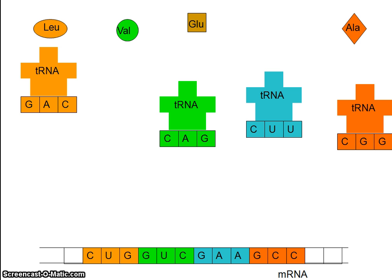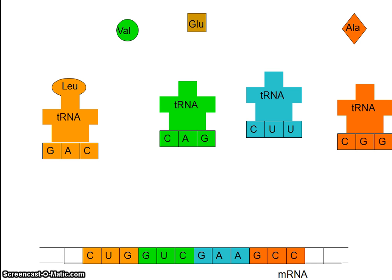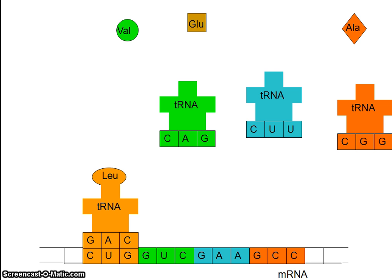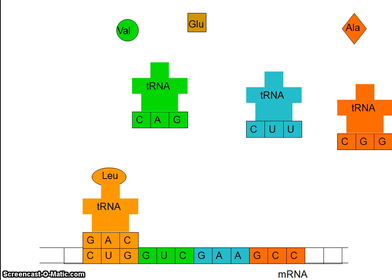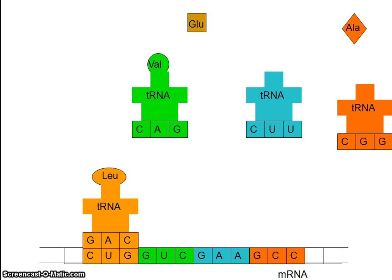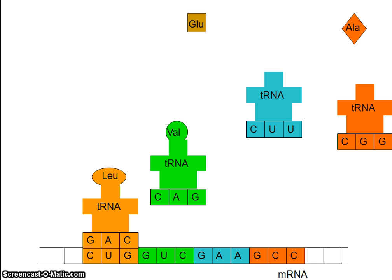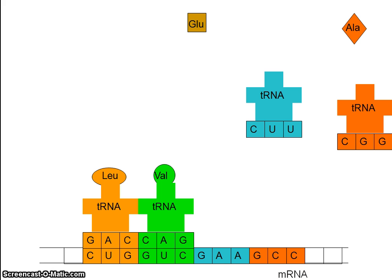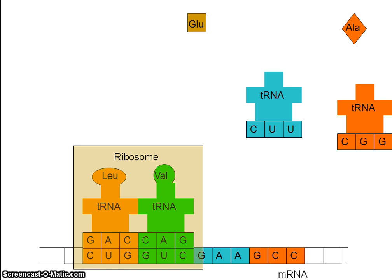Here we have the transfer RNA molecule with anti-codon GAC picking up the amino acid leucine and taking it to the ribosome, which holds the messenger RNA strand, and binding occurs where those bases are complementary. Then another transfer RNA molecule with anti-codon CGG picks up valine and again takes it to the messenger RNA where the base groups are complementary. The ribosome brings about the condensation reaction between those two amino acids while they're bound to the messenger RNA strand.